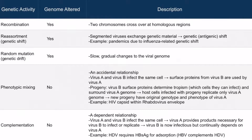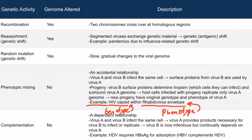An example of phenotypic mixing is an HIV capsid with its nucleic acids within a rhabdovirus envelope. The genotype would be HIV, but the phenotype would be considered rhabdovirus. The surface proteins from rhabdovirus allow HIV to invade cells that it otherwise couldn't — the rabies virus allows the HIV genome to enter a cell, and the HIV virus can then replicate. This is an unusual and unique example, but it exemplifies phenotypic mixing.